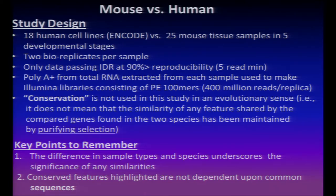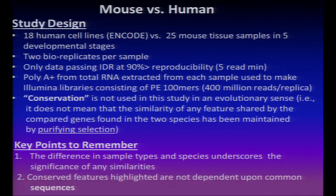I'm going to use the word conservation, and I want to make clear I'm not using it in the strict genetic sense. I'm not arguing this conservation was maintained by purifying selection. This is a more generic usage — maintained by mechanisms which may be other than genetic selection. Two key points going forward: the differences in sample types and species underscores the significance of any similarities, and the conserved features highlighted are not dependent on common sequences.